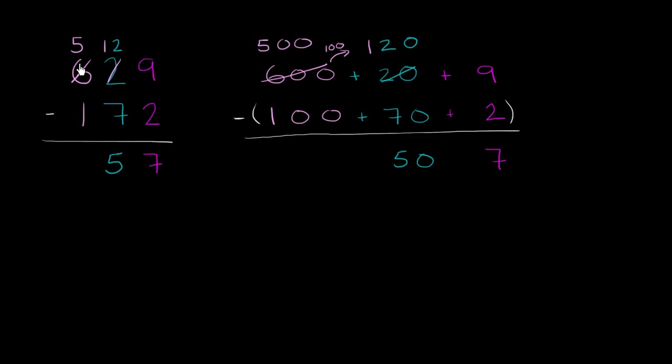And then finally, you have the hundreds place. 5 minus 1 is equal to 4. But that's really 500 minus 100 is equal to 400. And so you get 457, which is the same thing as 400 plus 50 plus 7.